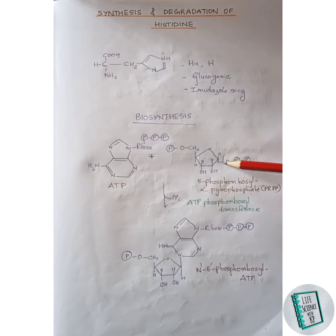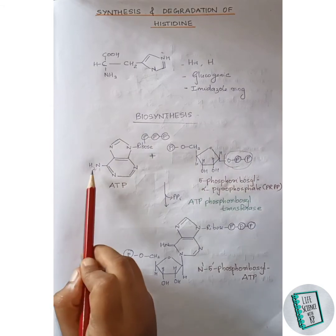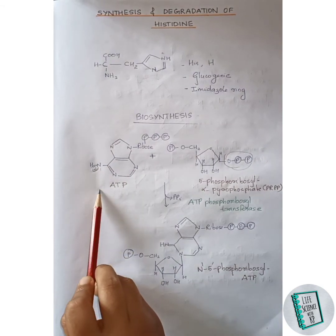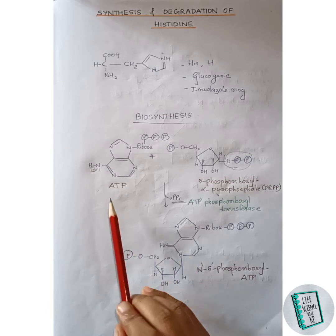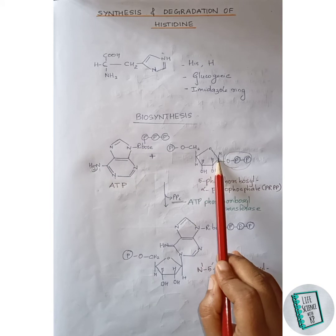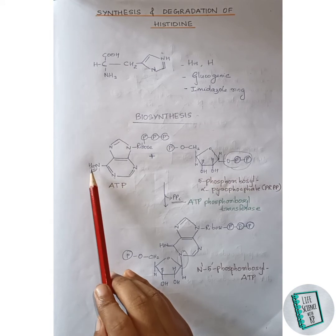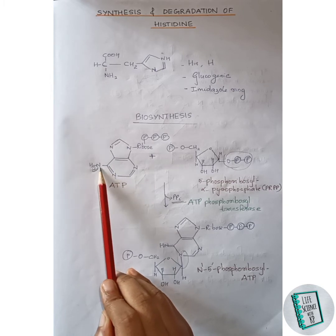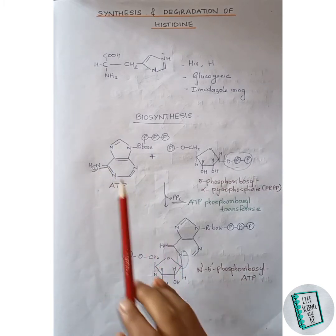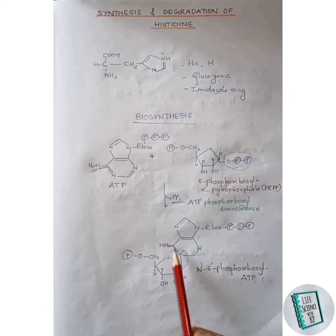The phosphate group from PRPP along with one hydrogen from ATP gets removed as pyrophosphate. After the removal of pyrophosphate, these two condense — the nitrogen and the carbon join to form a bond. Due to the removal of one hydrogen there is a change of valency, so a double bond shift occurs to maintain valency, and thus N1-5'-phosphoribosyl ATP is formed.